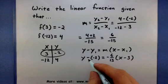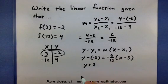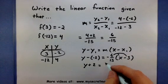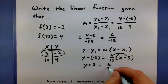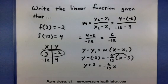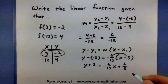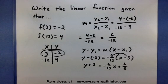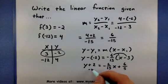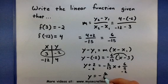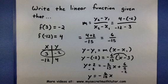Let's simplify this. So y + 2 equals—and we will distribute that in—(-6/15)x + 6/5. One last step: we need to subtract 2 to the other side. So y = (-6/15)x + 6/5 - 2.